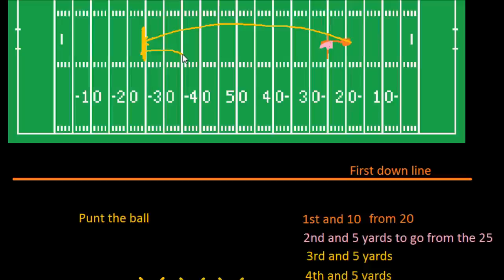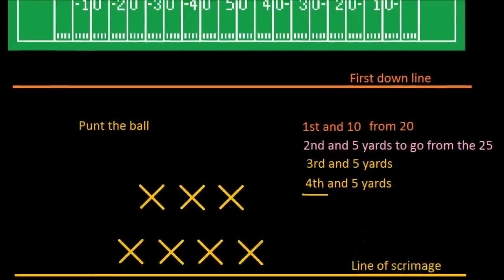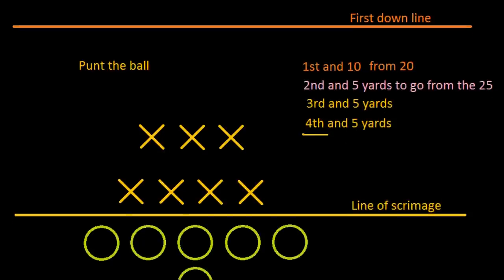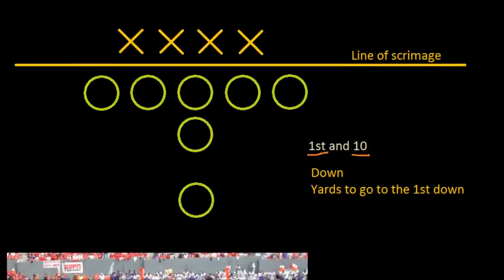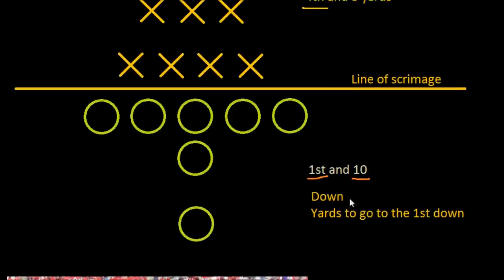So our two numbers: the first one is what down it is — first, second, third, or fourth down — and the second number is how many yards you have to go to get to the first down. That's how it works the whole way down the field.